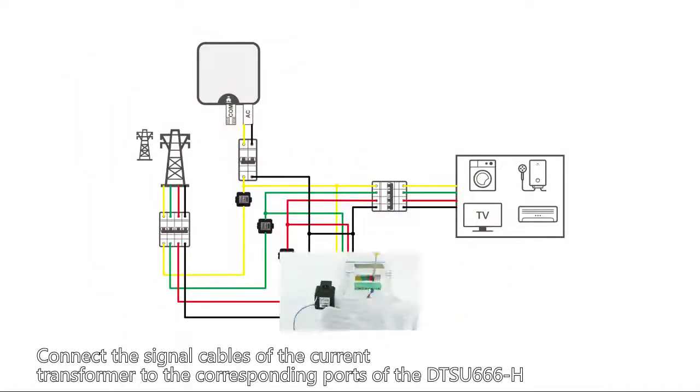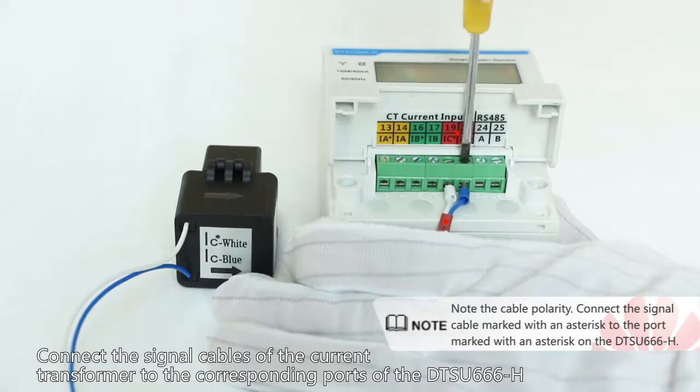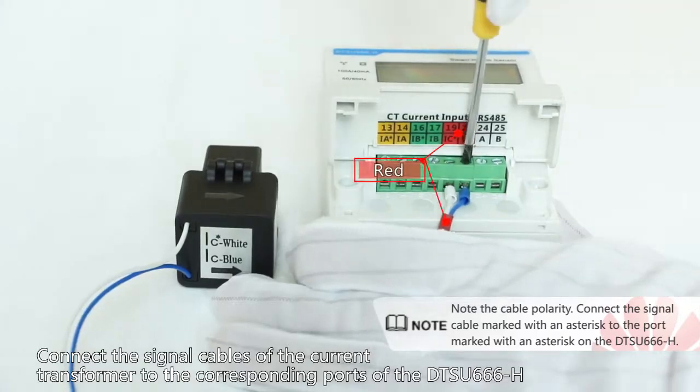Connect the signal cables of the current transformer to the corresponding ports of the DTSU-666H.